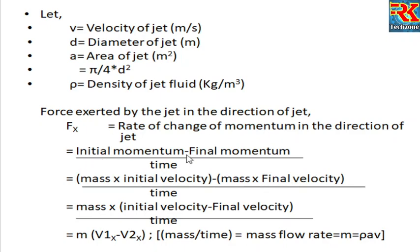Rate of change of momentum equals initial momentum minus final momentum divided by time — that is, mass into initial velocity minus mass into final velocity, all divided by time. This gives m dot into (v1x minus v2x). Mass per unit time is mass flow rate, which equals rho times A times V.